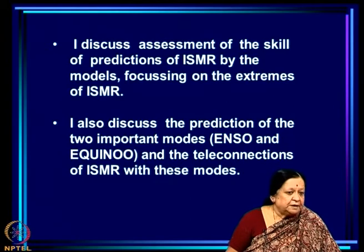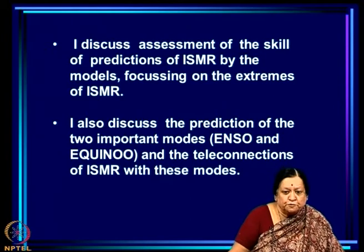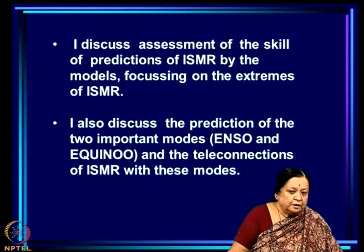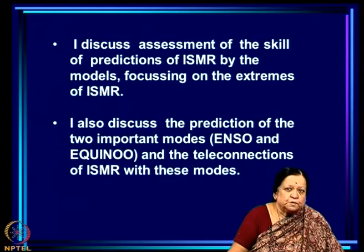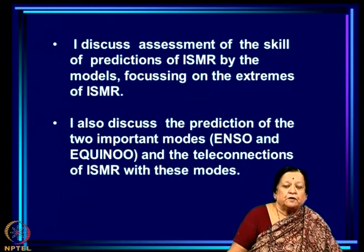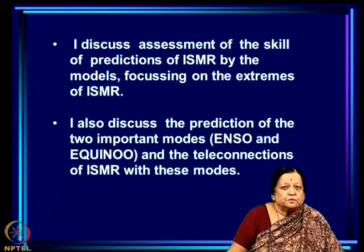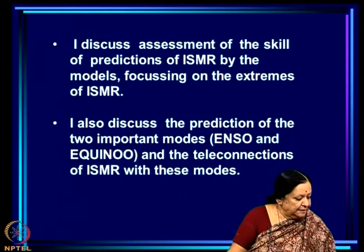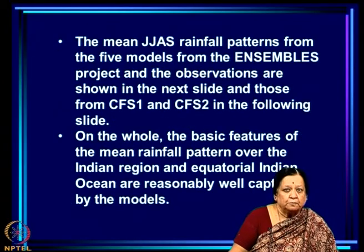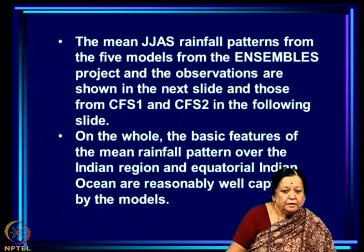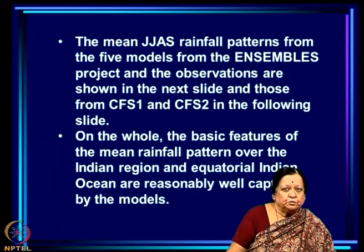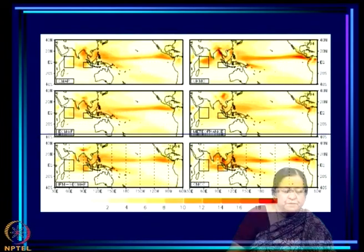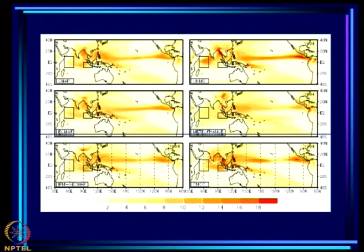We have seen that extremes of the monsoon are very much related to two phenomena: ENSO and EQUINOO. I will discuss the prediction of these two modes and their teleconnection with ISMR in the models. The mean JJAS rainfall patterns from the 5 ENSEMBLES models and observations are shown in the next slide, and from CFS1 and CFS2 in the following slide.